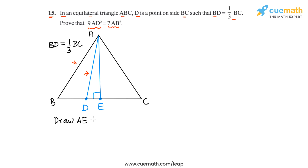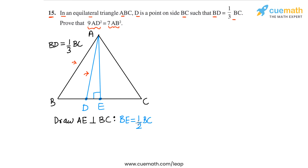Now, the thing about an equilateral triangle is that if you draw an altitude — a perpendicular from the vertex to the opposite side — it will also bisect the opposite side. This means BE will be half of BC, so E will be the midpoint of BC.